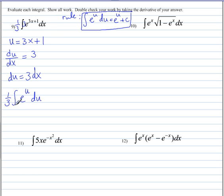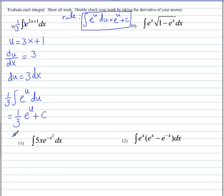Now we can take the antiderivative. We have one third times the antiderivative of e to the u du. We know the antiderivative of e to the u times du is e to the u plus c. The one third just stays on the outside as a constant. The antiderivative of e to the u is e to the u plus c. The final step: we replace u with what it was originally equal to, and that's 3x plus 1.